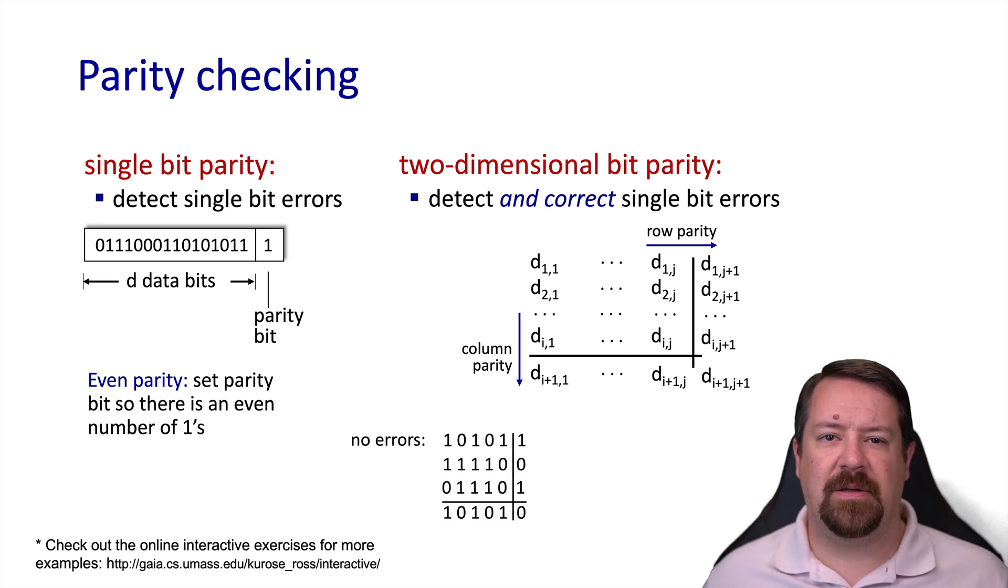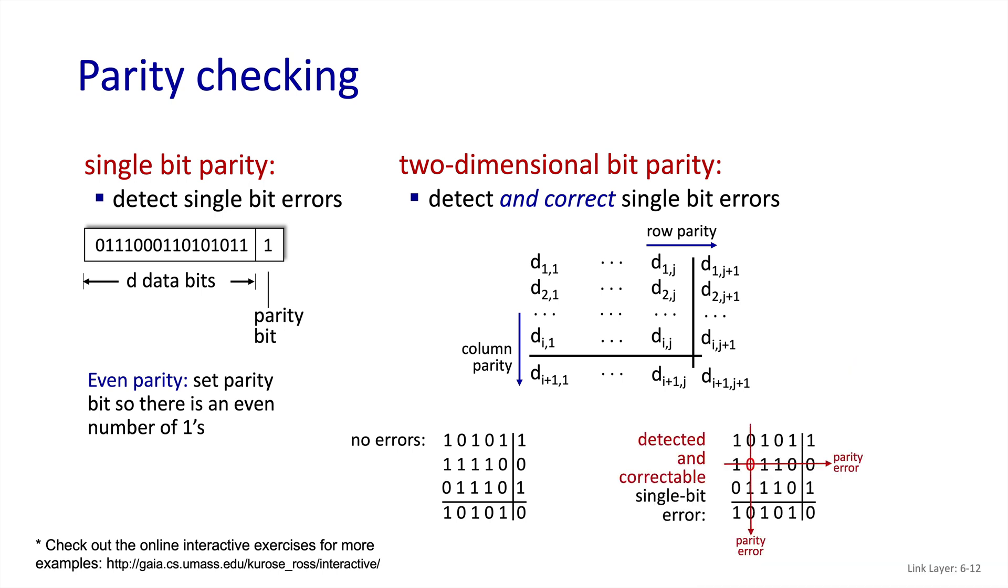So here is an example of a populated two-dimensional parity bit scheme with no errors. If this data and parity were transmitted through a link and one of the bits flipped, there would be a parity error on both the row and the column identifying exactly which bit flipped. Since there's only two possible states for the bit, it can be corrected by flipping it back and the data can be delivered to the IP layer. So we would say that the two-dimensional parity scheme can detect and correct any single bit error. If two bits were flipped, the scheme would also detect that an error had occurred, but it's not guaranteed to be able to correct a two-bit error.